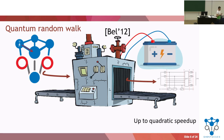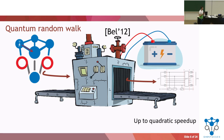Over time, this machine has been made more complicated and also more powerful by Belloś — this is referred to as the electric network framework. This was the most powerful framework to discuss quantum random walks in, and this was our starting point. We took this machine by Belloś and made it more complicated.